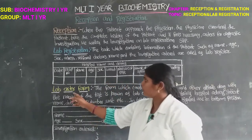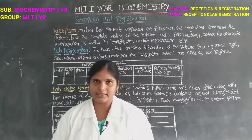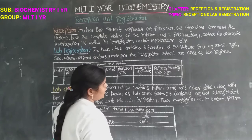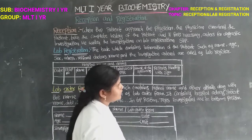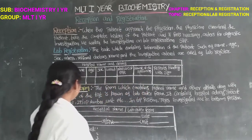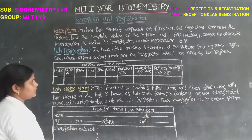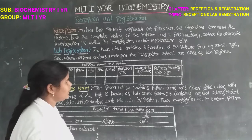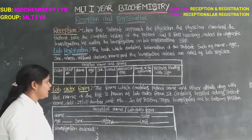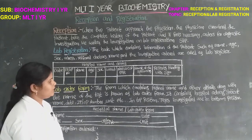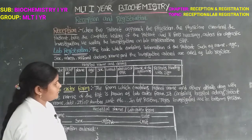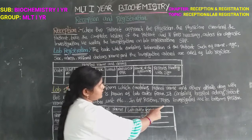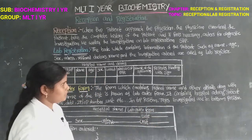Next is the Lab Order Form. The lab order form is the form which contains the patient name and other details along with the name of the test. It contains hospital address, patient name, date, IP or OP number, unit, etc. Patient details appear in the top position, and test investigations are listed in the bottom position.